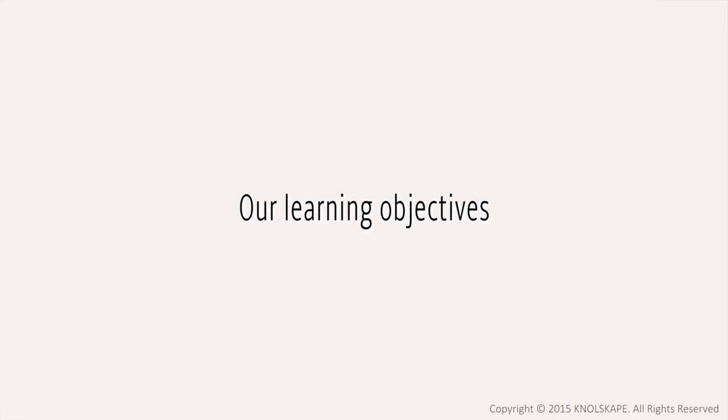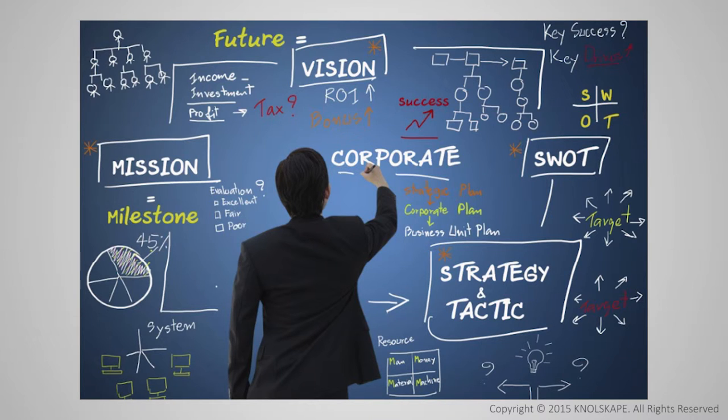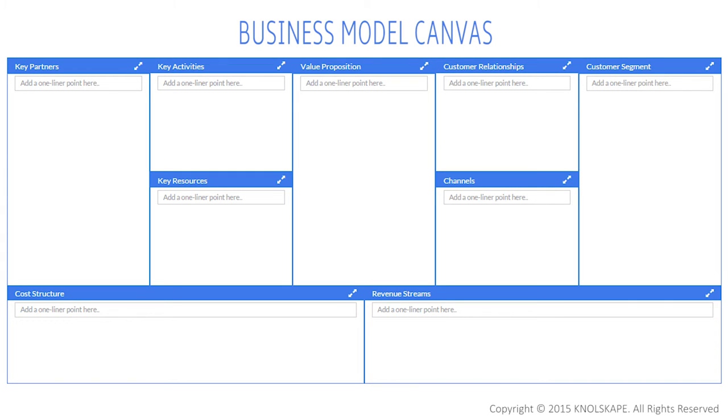Here are our learning objectives. By the end of this course, you will be able to understand key trends that are shaping businesses today. You will learn the method to think strategically about any organization. You will also learn to appreciate the impact of tactics and actions on the overall strategy and results of an organization.